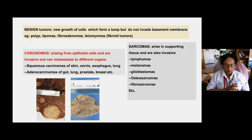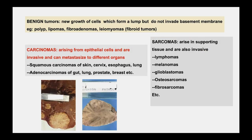Benign tumors are a new growth of cells that form a lump but don't invade the basement membrane — like a polyp, lipoma, fibroadenoma, or leiomyomas (also called fibroid tumors). Carcinomas arising from epithelial cells are invasive and can metastasize to different organs such as liver and brain. Carcinomas arise as squamous types in skin, cervix, esophagus, and lung, and adenocarcinomas in gut, lung, prostate, breast, etc. Today we are focused on carcinomas arising from epithelial cells that invade and metastasize.